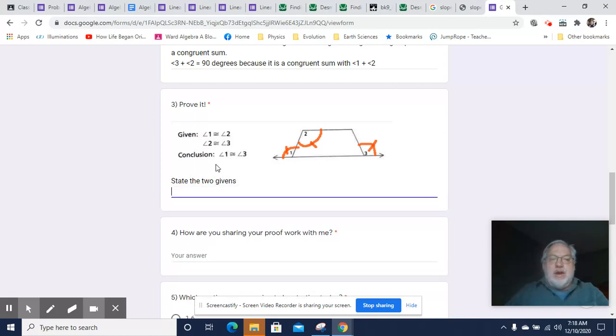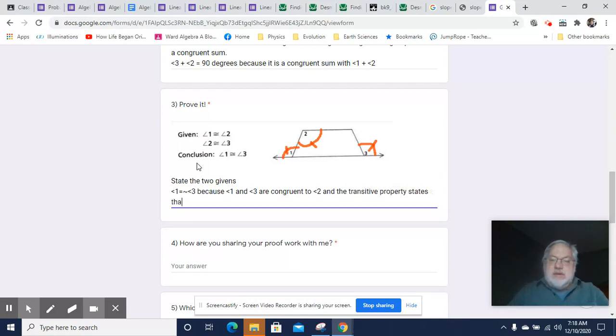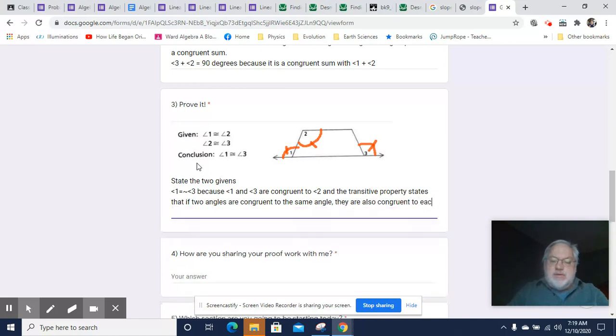And then go on and talk about how we get to the conclusion. It's simply angle 1 is congruent to angle 3 because angle 1 and angle 3 are congruent to angle 2. And the transitive property states that if two angles are congruent to the same angle, then they are also congruent to each other. And this is theorem 15, by the way. It's often useful to make a note of that so you know, and you can go back and take a look at that. All right, I hope this has helped, and I'm going to stop. We'll see you in the next one.